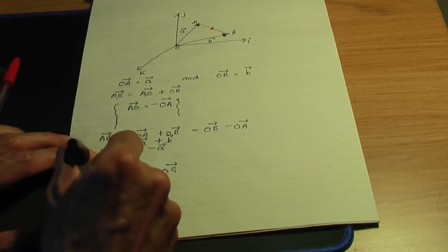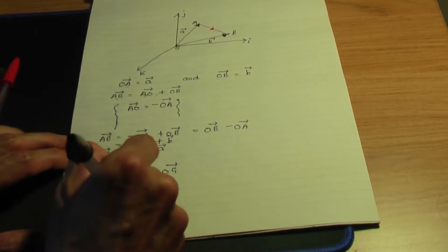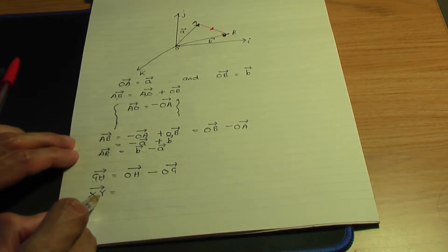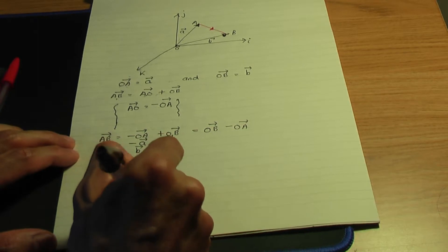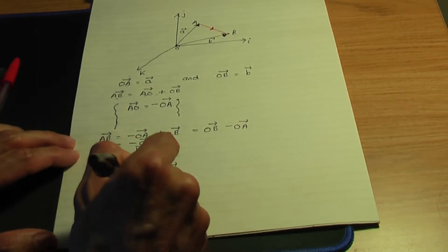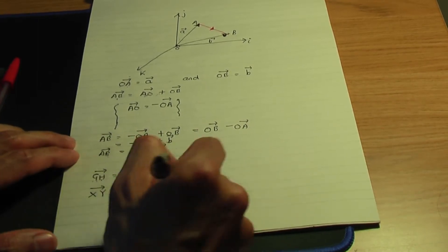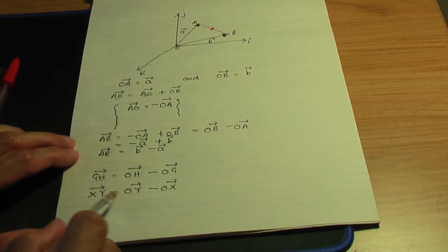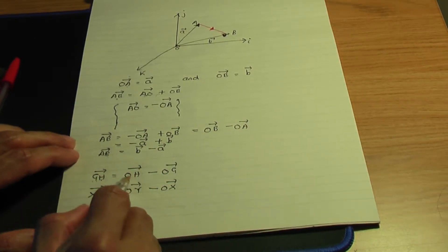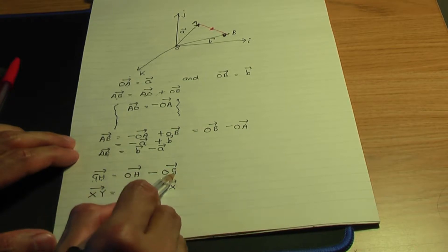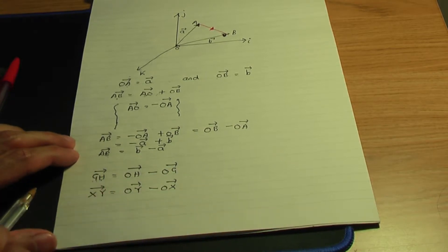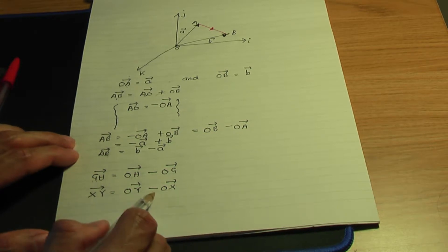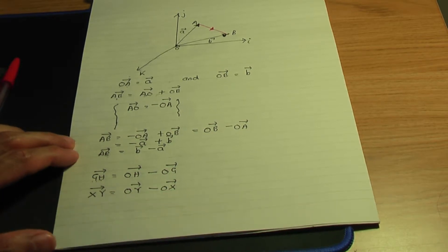The same thing if you want to calculate the vector XY: XY will be O of the second letter, which is Y, minus O of the first letter, which is X. So that you can do if you're given the vectors OH and OG to work out GH, and this you can do if you're given the vectors OX and OY.